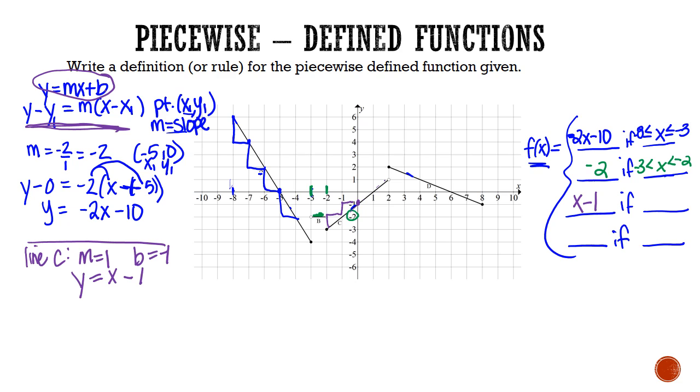So for that piece, the equation is x minus 1, and that's if your x values are between negative 2, and we're including negative 2 because there's a closed circle there, and positive 2, and we're not including positive 2.